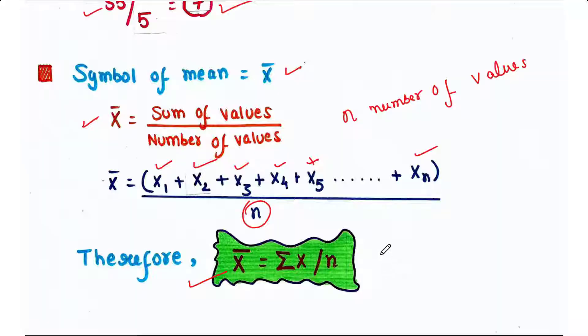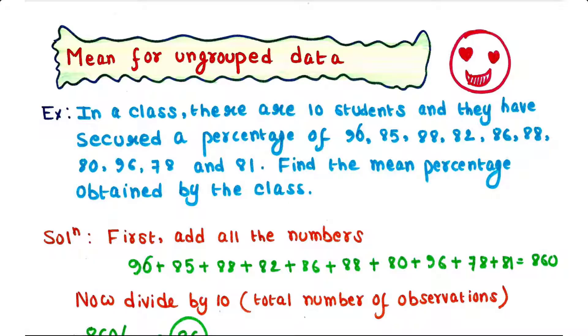Now we can calculate mean for both ungrouped as well as grouped data. Let's see an example for calculating mean for ungrouped data first. In a class there are 10 students, and they have secured a percentage of 96, 85, 88, 82, 86, 88, 80, 96, 78, and 81. Find the mean percentage obtained by the class.